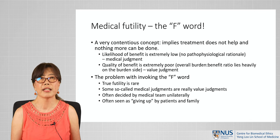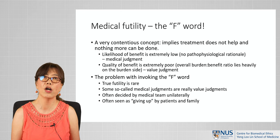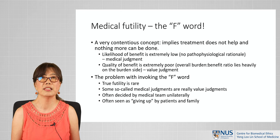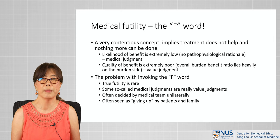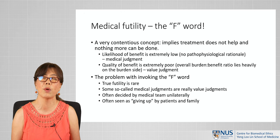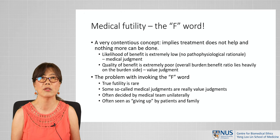The next category of futility is where the quality of benefit is judged to be extremely poor, in which case the overall burden-to-benefit ratio lies heavily on the burden side. This is not a medical judgement — this is really a value judgement. Usually the patients or the family will be the ones that know themselves best what their values are, and they are the ones that decide on whether the quality of benefit is poor or not.